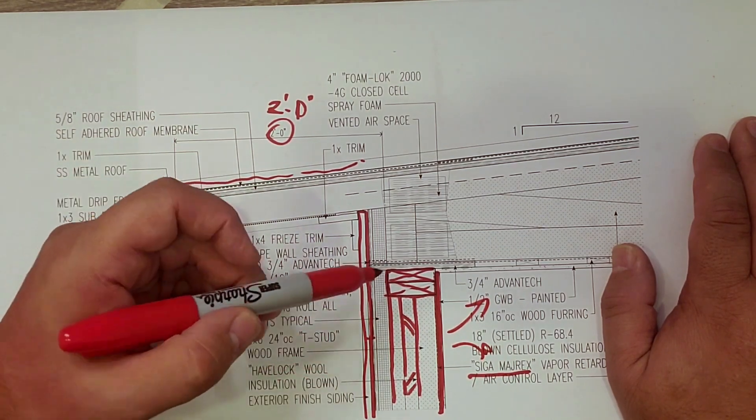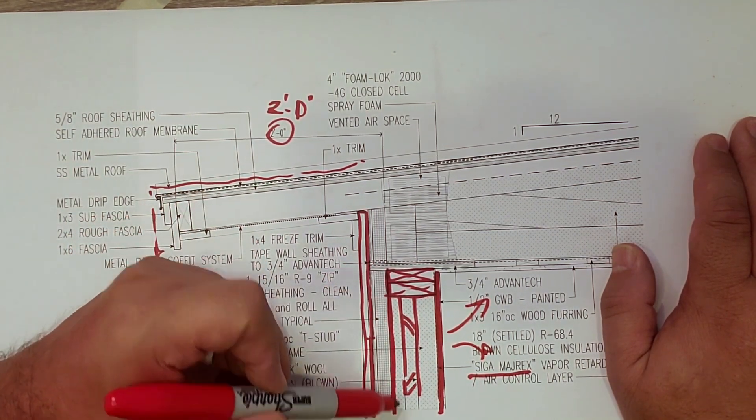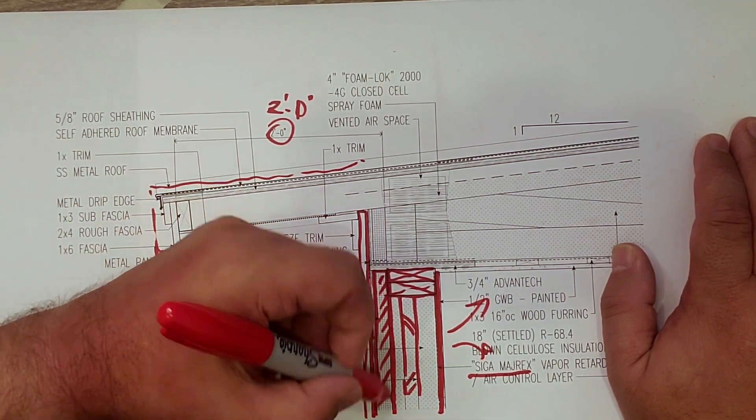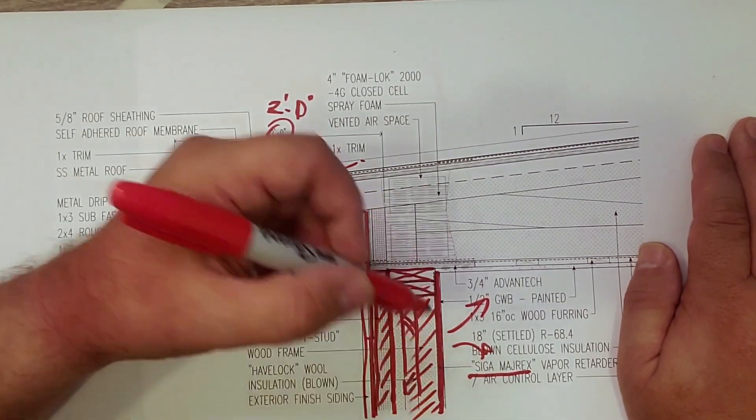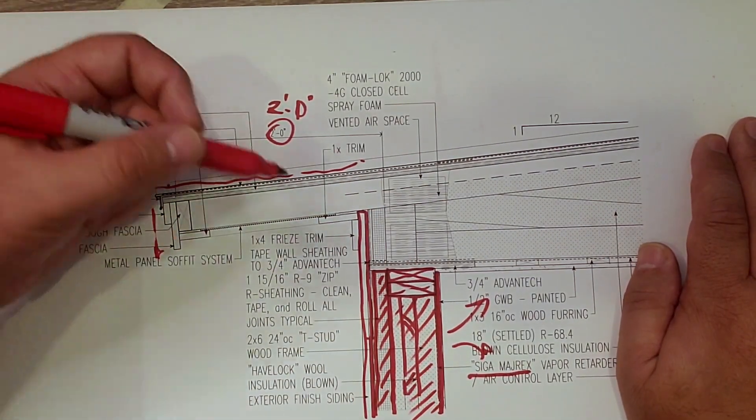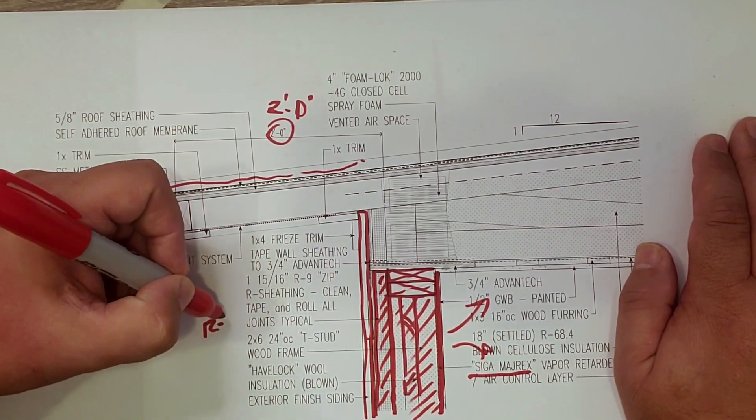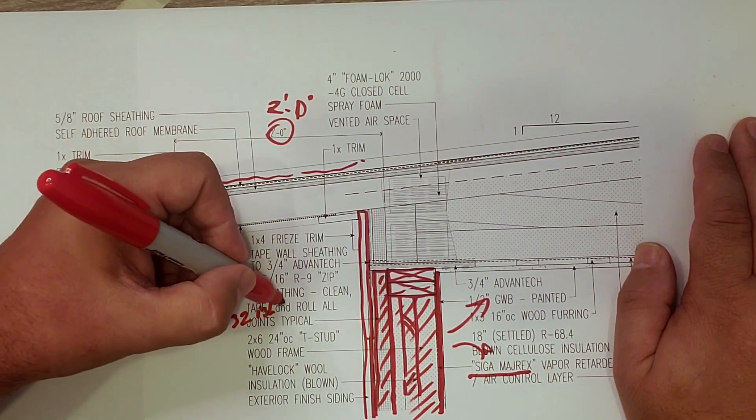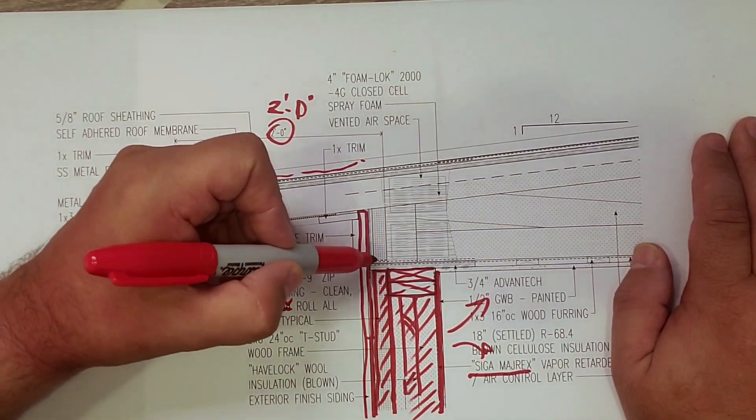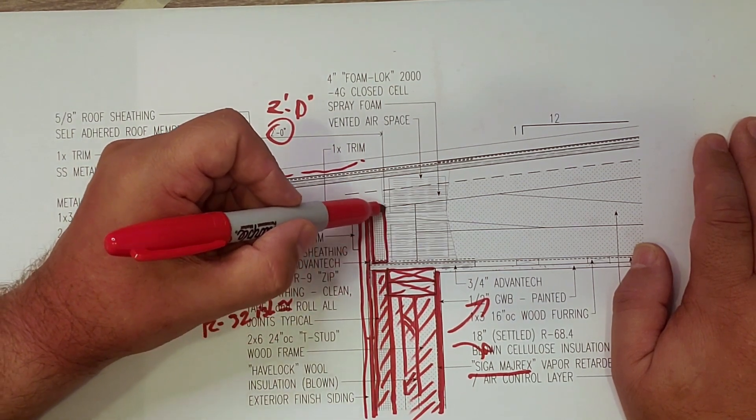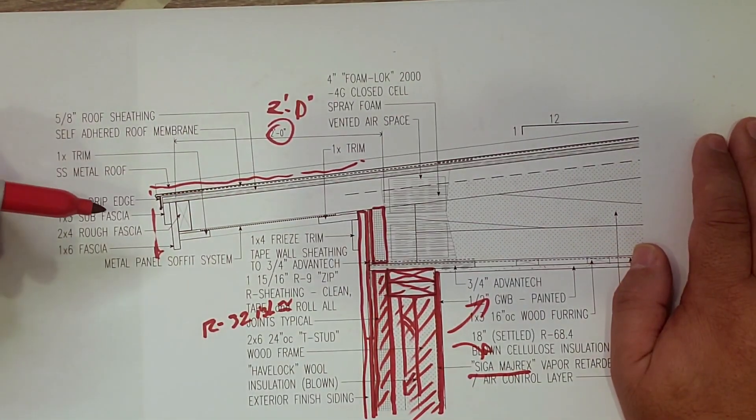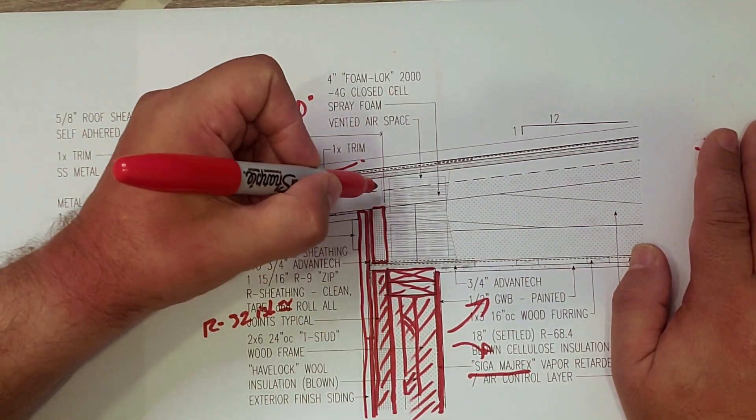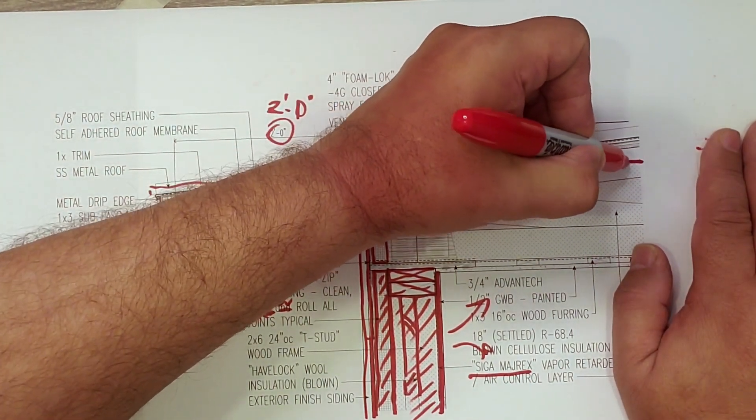As far as thermal goes, you notice here, we have our Zip R9. We brought up the wall. We have our Havelock Wool in the wall there. So again, we're at roughly R32-ish, R31-ish, something like that, in that wall system. Notice that we actually carry that up here too. We're going to talk about the air barrier in a second.